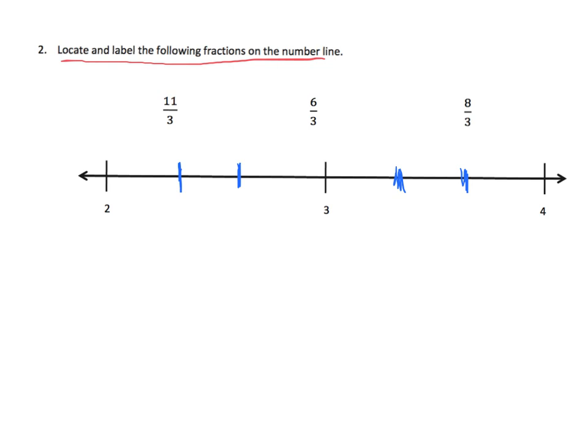So now we need to locate where these fractions live on the number line. And from previous lessons, we learned about the whole numbers. That we know that this one is going to be 6 thirds, because 6 divided by 3 is 2. And that this one is going to be 9 thirds, because 9 divided by 3 is 3. And lastly, this is going to be 12 thirds, because 12 divided by 3 is 4.